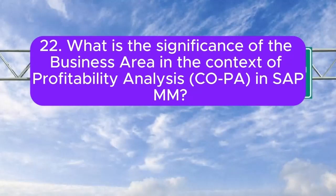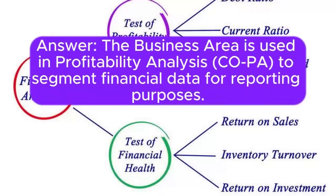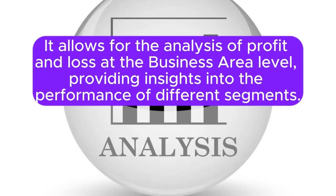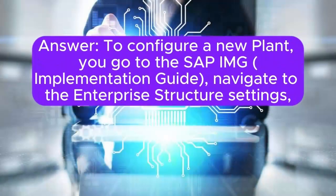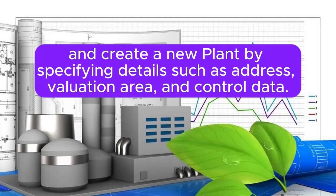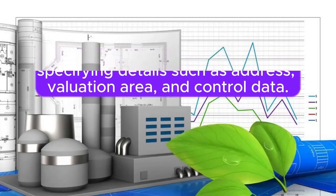Question 22: What is the significance of the business area in the context of profitability analysis (Co-PA) in SAP MM? The business area is used in profitability analysis Co-PA to segment financial data for reporting purposes. It allows for the analysis of profit and loss at the business area level, providing insights into the performance of different segments. Question 23: How can you configure a new plant in SAP MM? To configure a new plant, you go to the SAP IMG implementation guide, navigate to the Enterprise Structure settings, and create a new plant by specifying details such as address, valuation area, and control data.